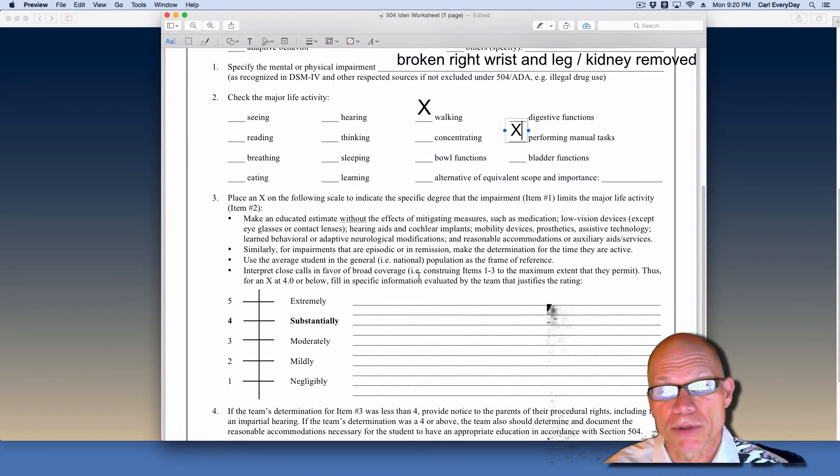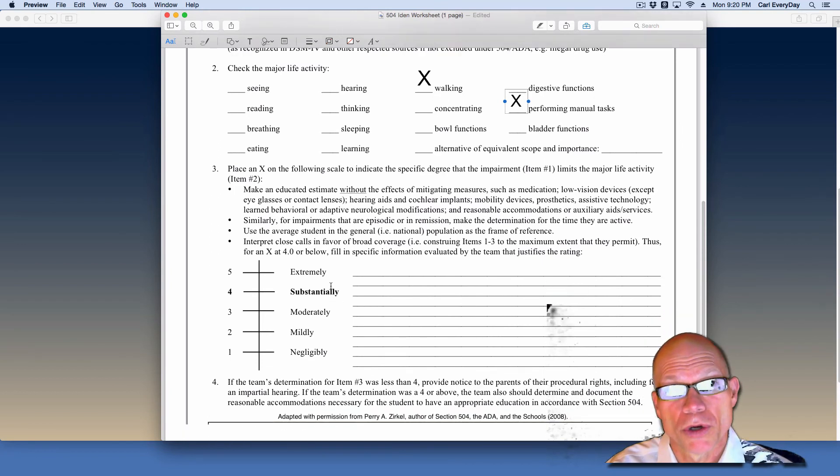So clearly there was some argument between some folks who were saying there was a child whose impairment was not impacting them substantially and some folks who said it was. So the team is asked to include a scale here and say you have to decide as a group without considering the effects of mitigating measures. So we don't consider that he already has a wheelchair. We don't consider that James might already have a computer.